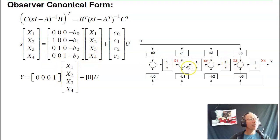The block diagram is this. If we look at the state x1, x1 dot is minus b0 times x4 plus c0 times u. x2 dot is x1 minus b1 times x4 plus c1 times u. So that's observer canonical form.